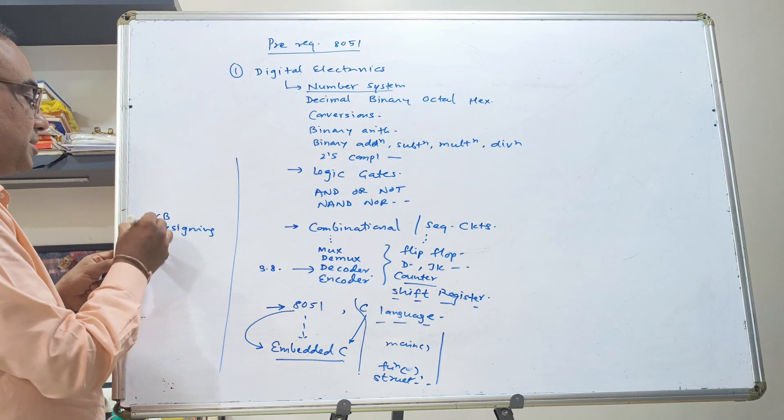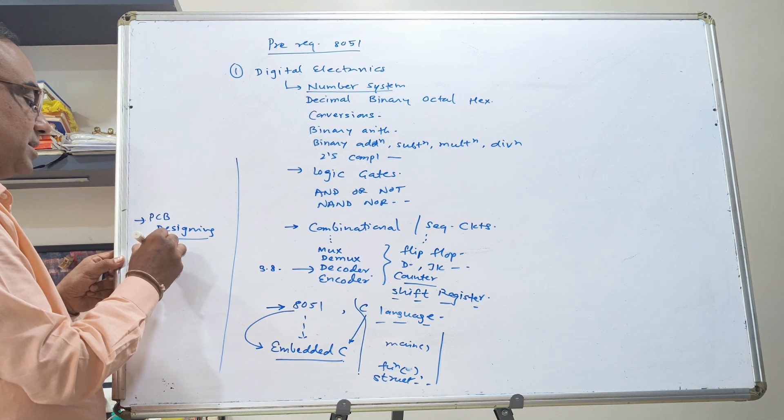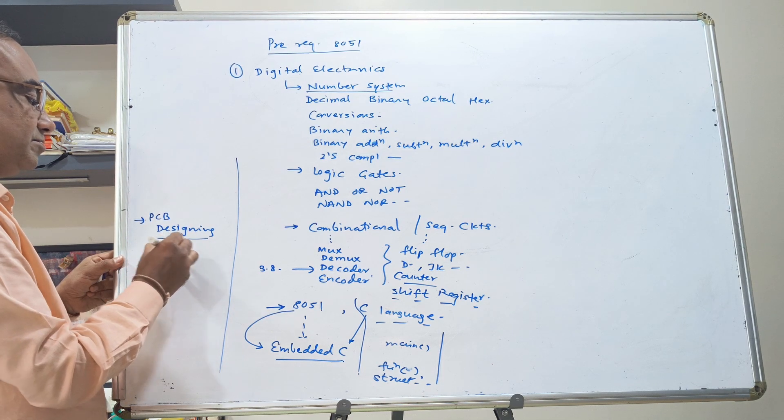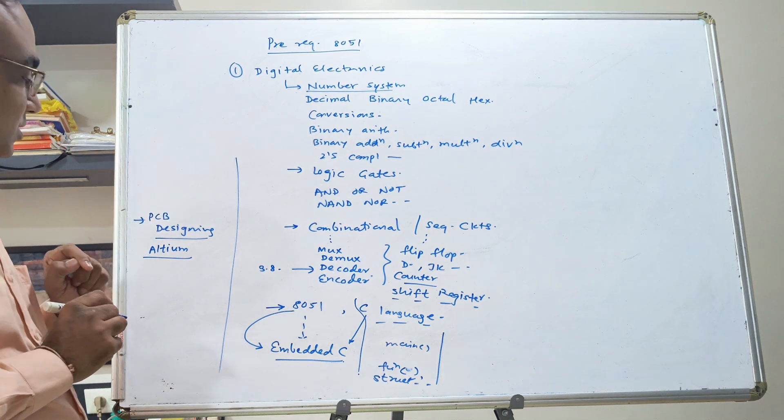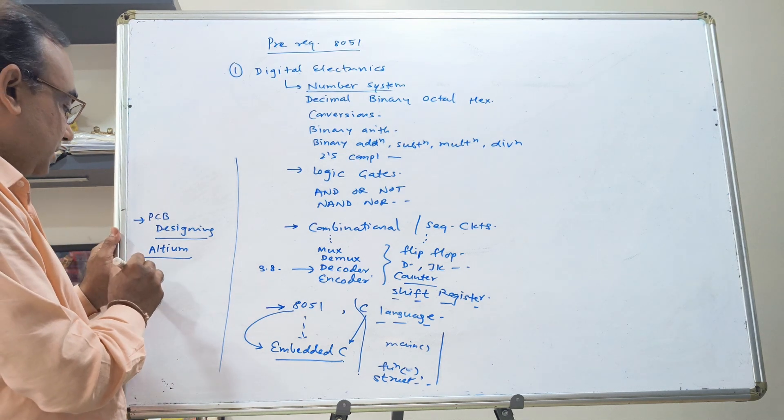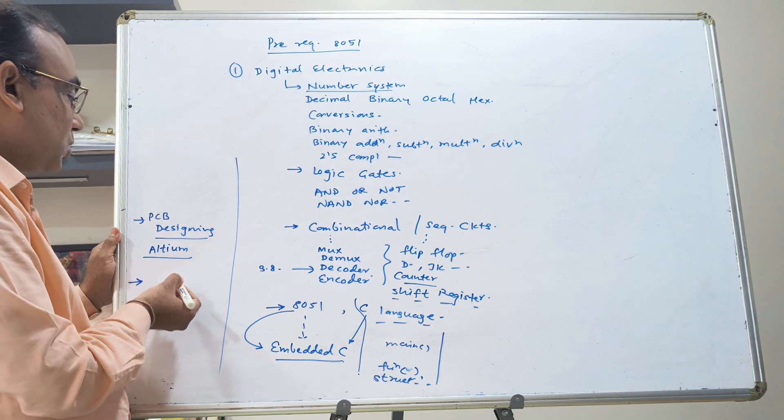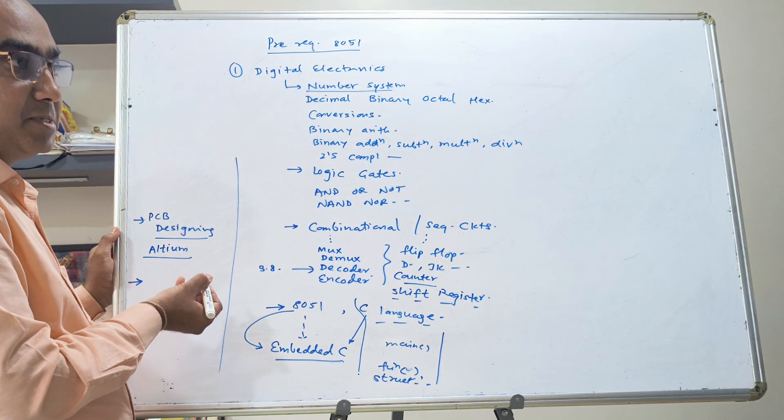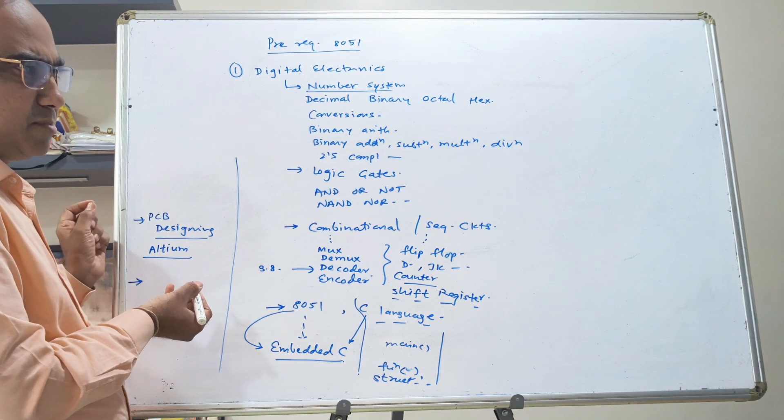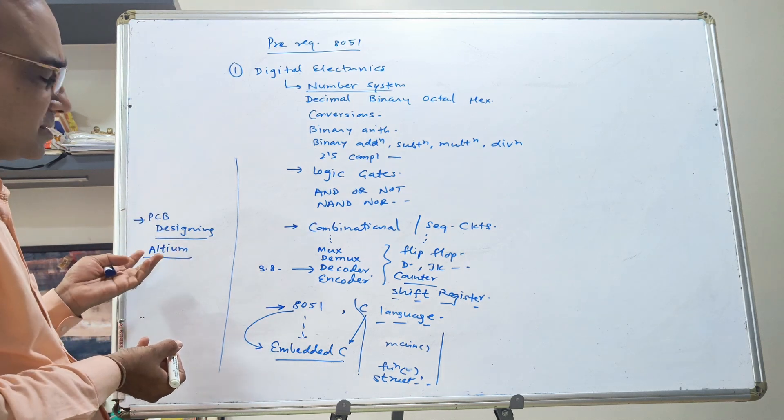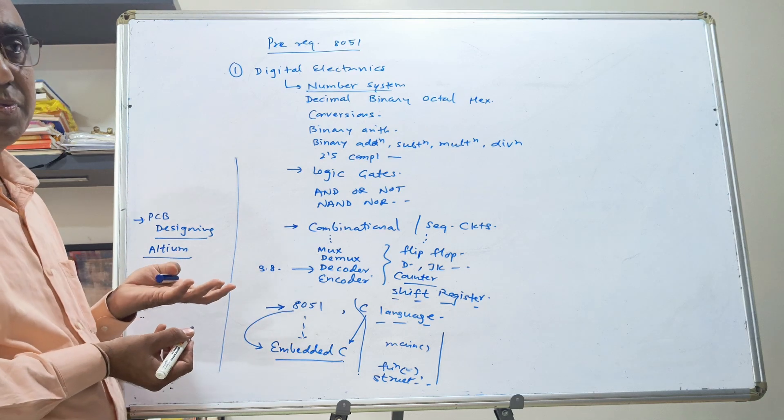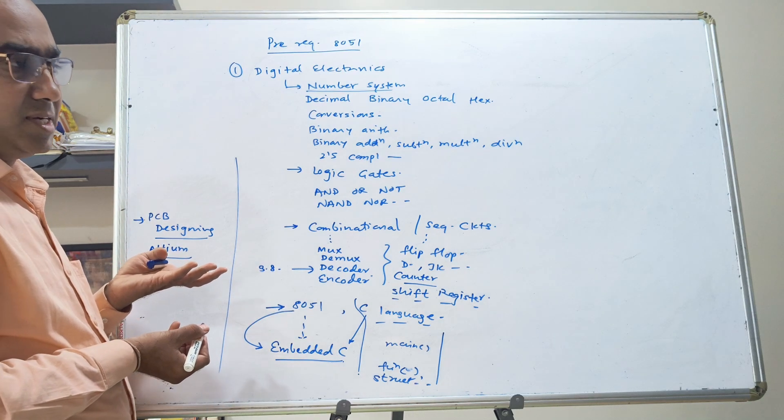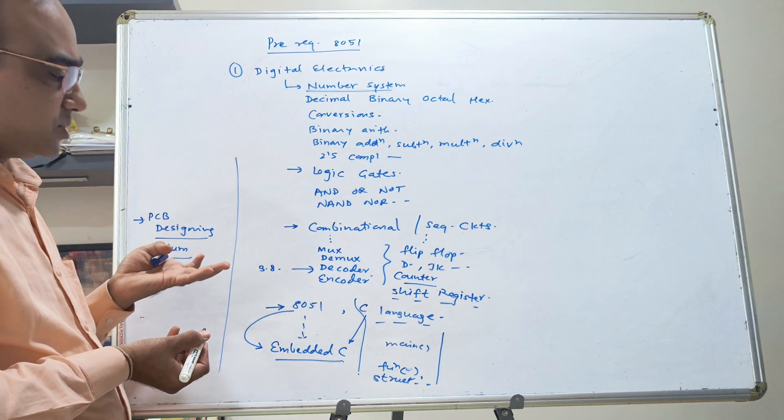For PCB designing, we have software like Altium. That has a student version available. You can use that student version. Then you should know basic process, how the PCBs are manufactured. Suppose you are going for simple single-sided or double-sided board. That you can do using etching and printing and all those things.